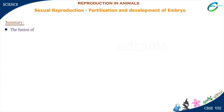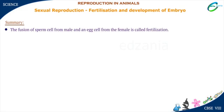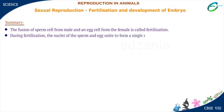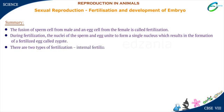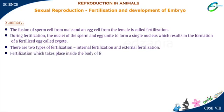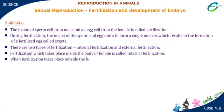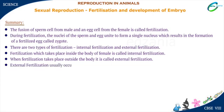Summary: The fusion of sperm cell from male and an egg cell from the female is called fertilization. During fertilization, the nuclei of the sperm and egg unite to form a single nucleus, which results in the formation of a fertilized egg called zygote. There are two types of fertilization — internal fertilization and external fertilization. Fertilization which takes place inside the body of the female is called internal fertilization. When fertilization takes place outside the body, it is called external fertilization, and it usually occurs in water.